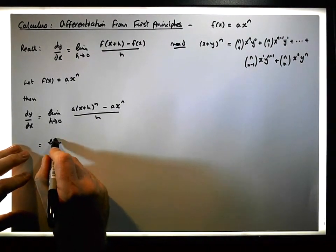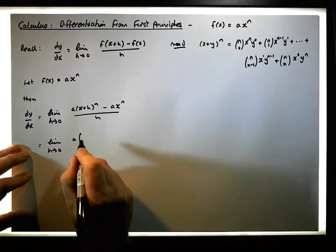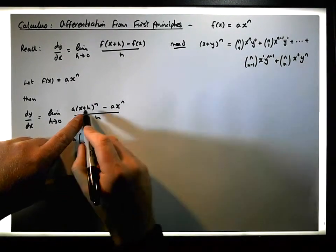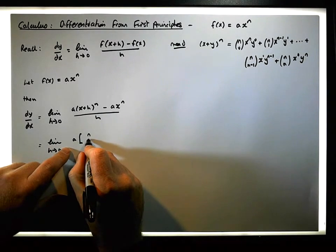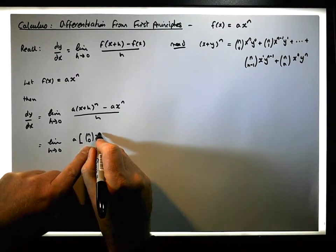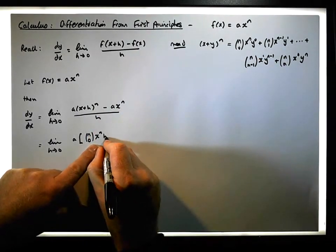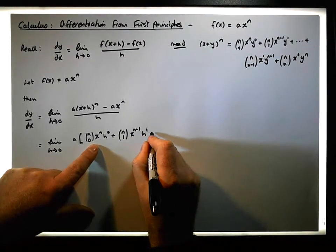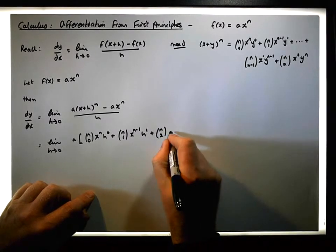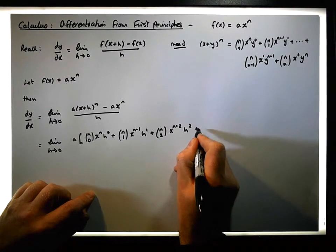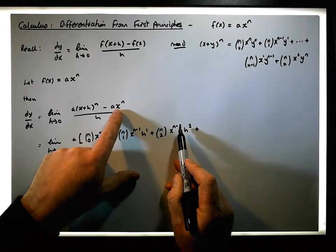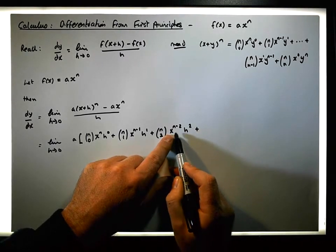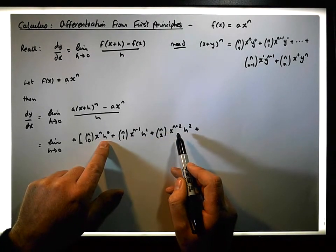So this becomes the limit as h tends to zero of a times the binomial expansion of (x+h)^n. Anywhere we see a y in the expansion, we put in h. So (x+h)^n becomes nC0 times x^n, plus nC1 times x^(n-1) times h^1, plus nC2 times x^(n-2) times h^2. What's happening is that we're decrementing the exponent of x down each time. If we keep taking one away, it eventually gets down to x^1 and then x^0. And what's also happening is that this particular factor — the h term — is incrementing up.